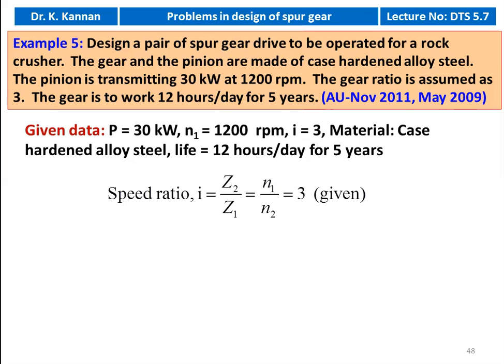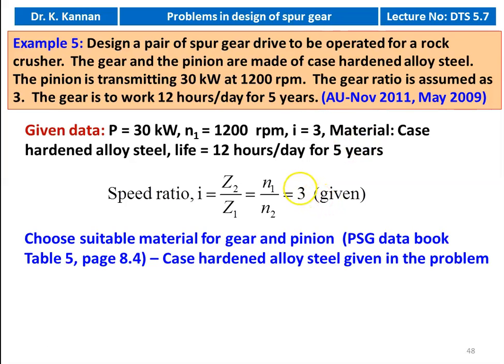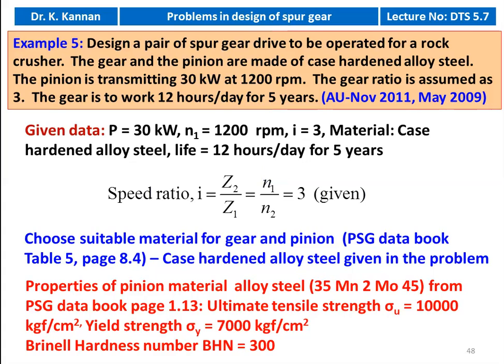We calculate the speed ratio: i equal to 3, as given in the problem. We choose the material — it is also given: case hardened alloy steel. We take the properties of the pinion material, alloy steel 35M and 2 MO 45, from PSG data book page number 1.13. The ultimate tensile strength sigma u equals 10,000 kilogram force per centimeter square, yield strength 7,000 kilogram force per centimeter square, and the Brinell hardness number BHN 300.